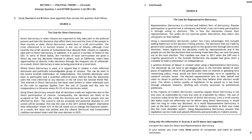The question asks us to compare the cases for direct and representative democracy and identifies that we must find three points of comparison. We should think about themes, aspects, or features when identifying these points. The final instruction is to reach an overall conclusion about what we have read. It may be tempting to add in our own knowledge here, but since this will not be credited, this is not advisable.